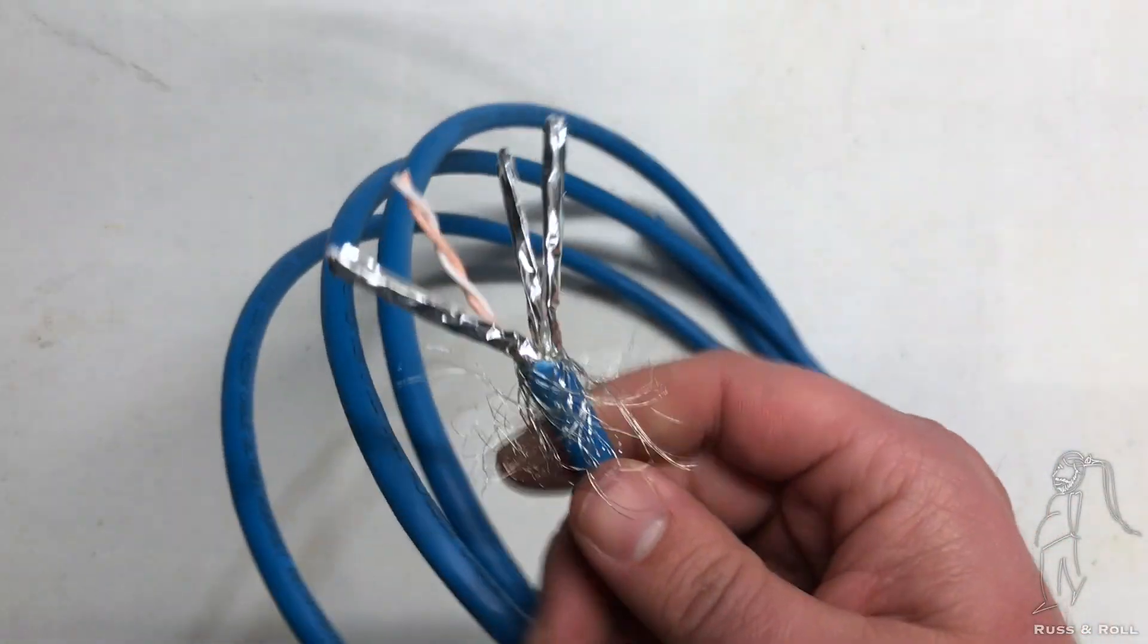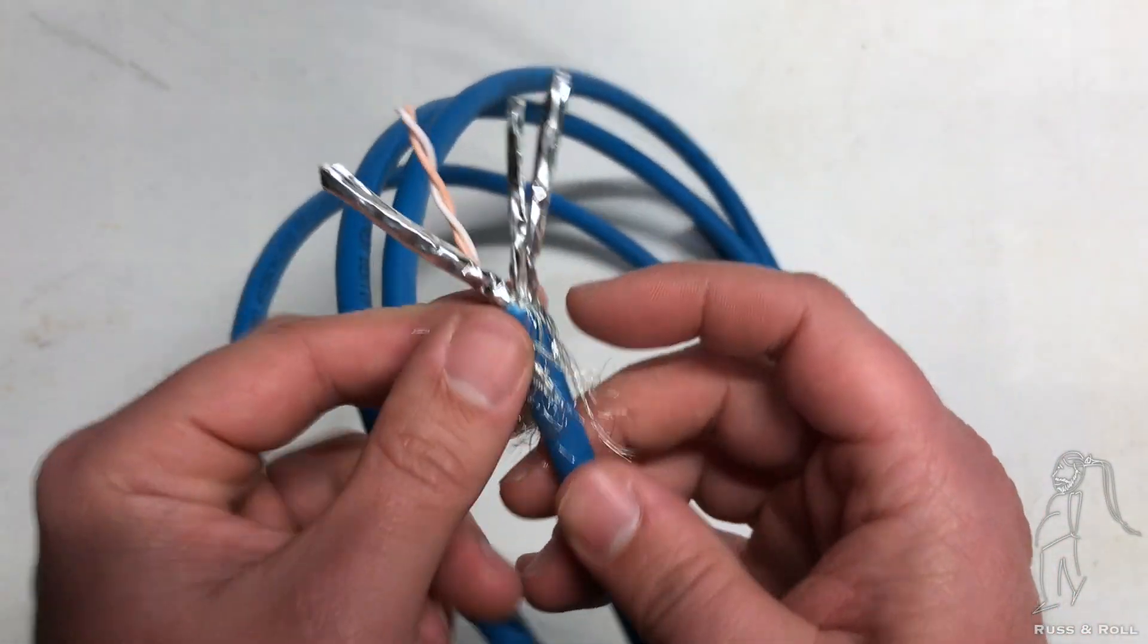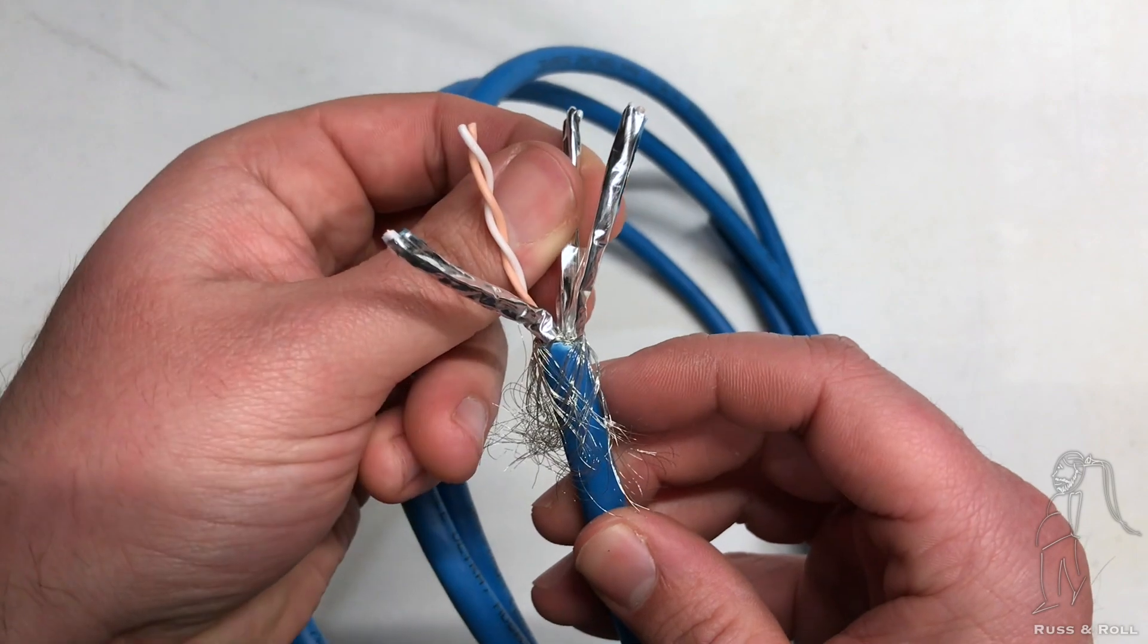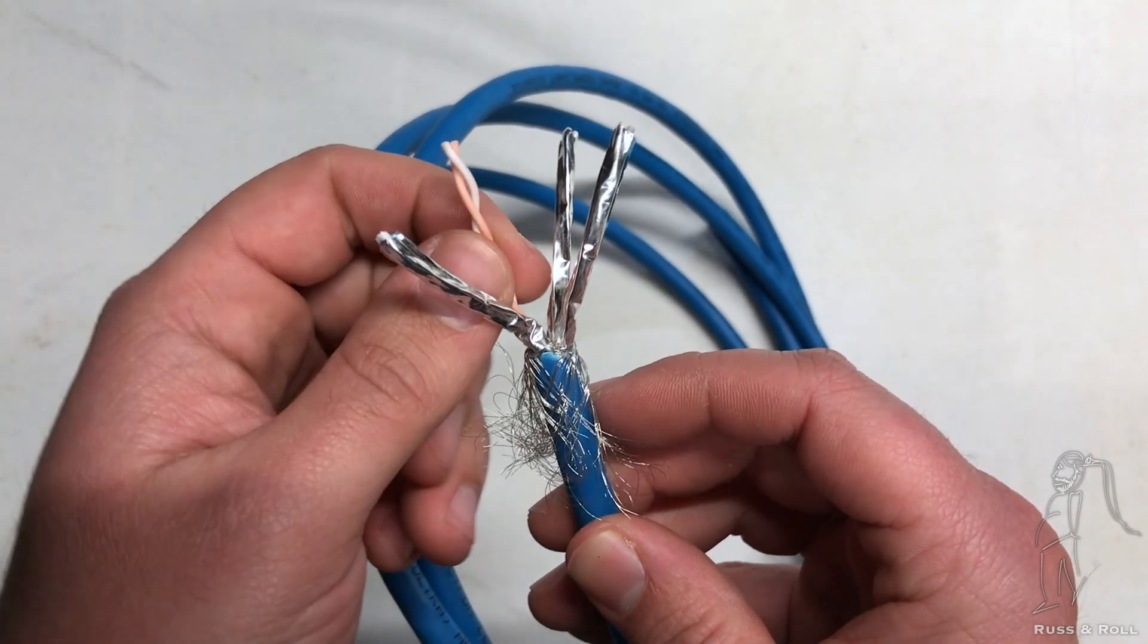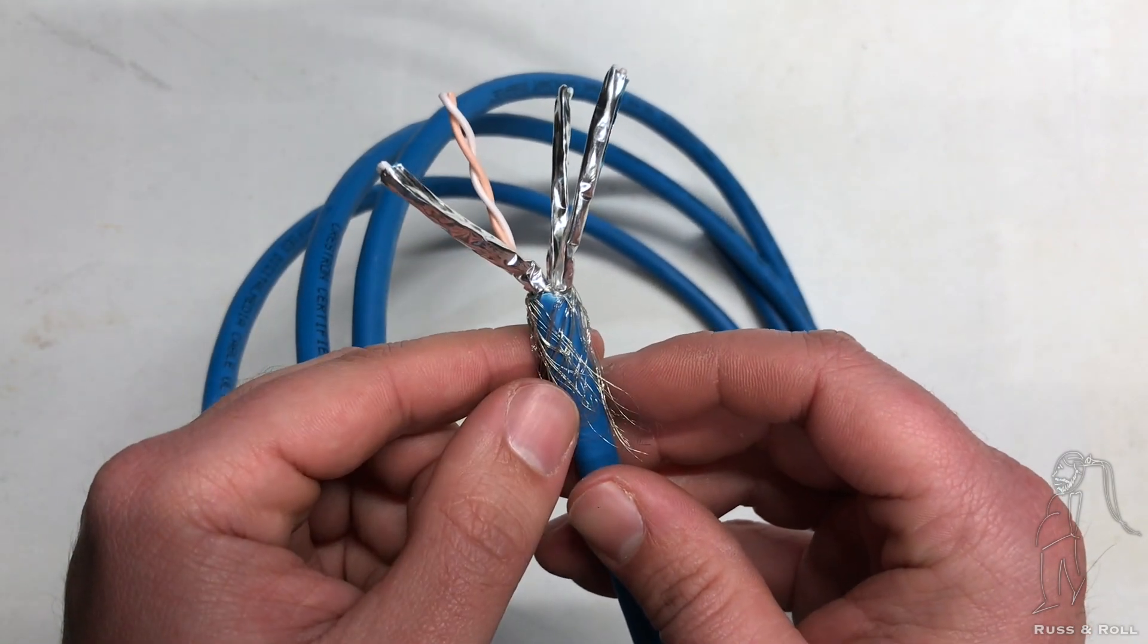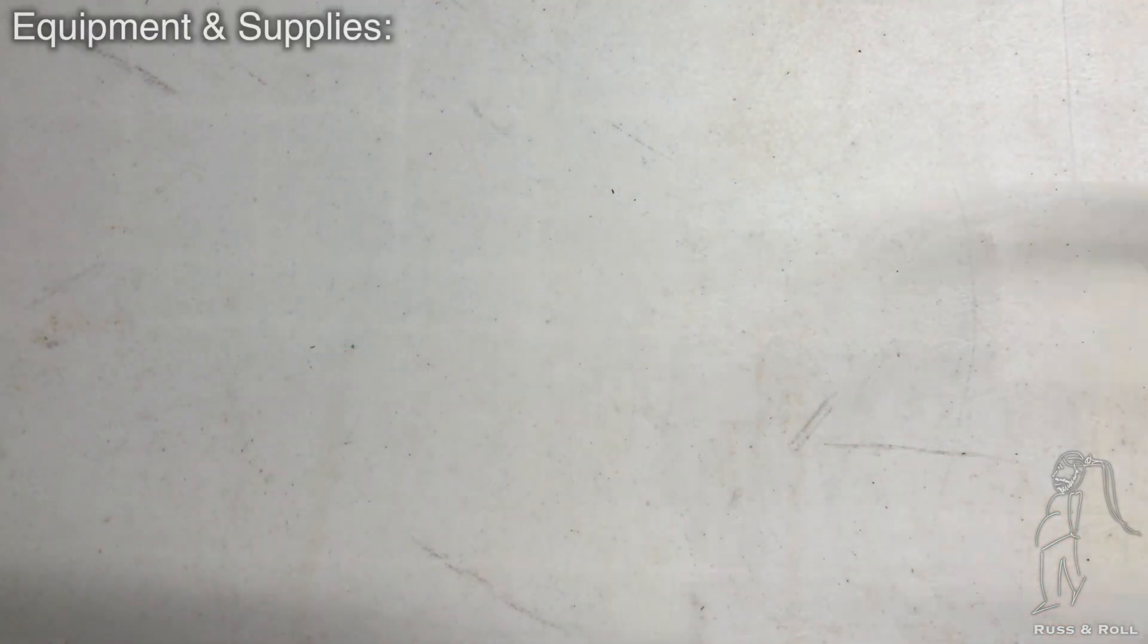This cable is a little bit different to terminate than your standard CAT5 or CAT6 cable, and that's because it's constructed differently. It has this braided shield, and then each individual pair has a foil shield. This one doesn't because I cut it off already to show you what's inside. So how do we terminate this thing?